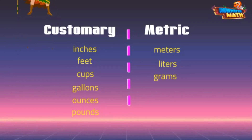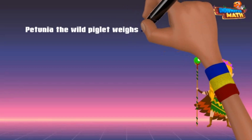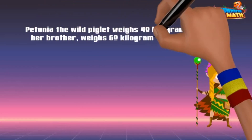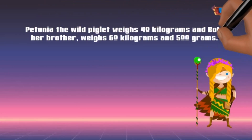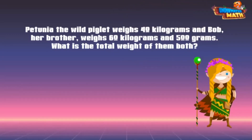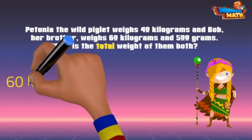Here's the first problem. Petunia the wild piglet weighs 40 kilograms, and Bob her brother weighs 60 kilograms and 500 grams. What is the total weight of them both? I see a keyword — "the total" — which means we will use addition to solve this problem. There are 1,000 grams in one kilogram.